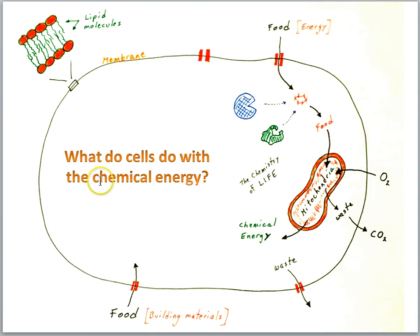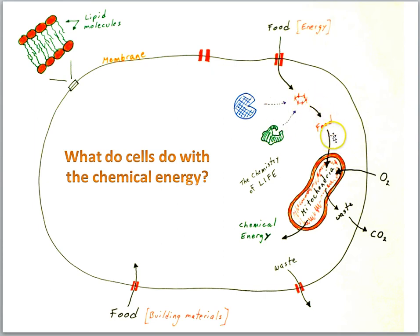What do cells do with the chemical energy? Here we see the food molecules have been operated on by some proteins, and then the resulting food molecules go in. Then chemical energy is produced — what are cells going to be doing with that chemical energy?